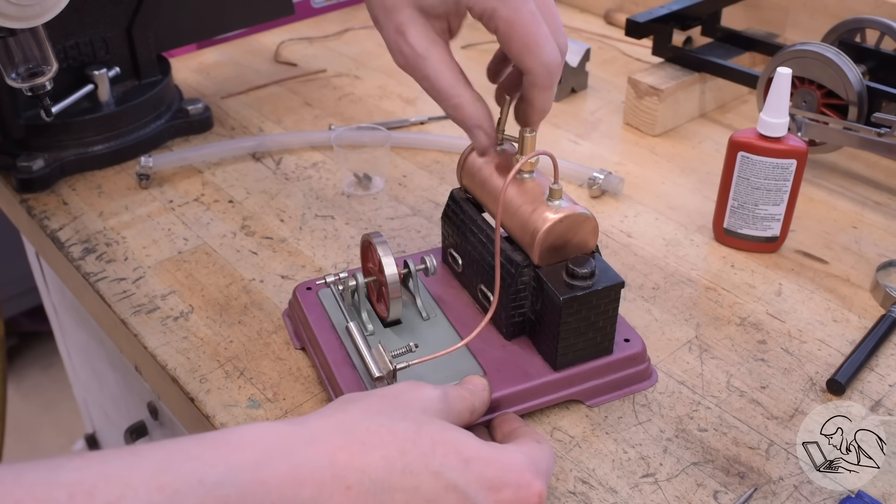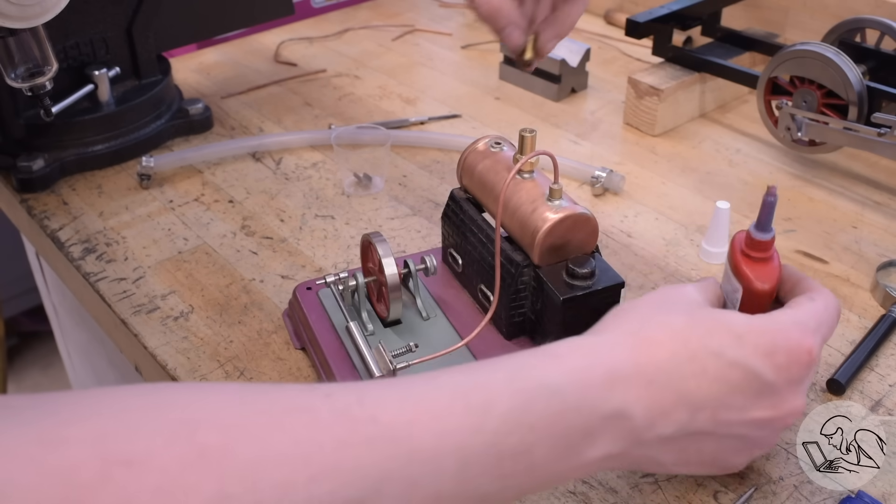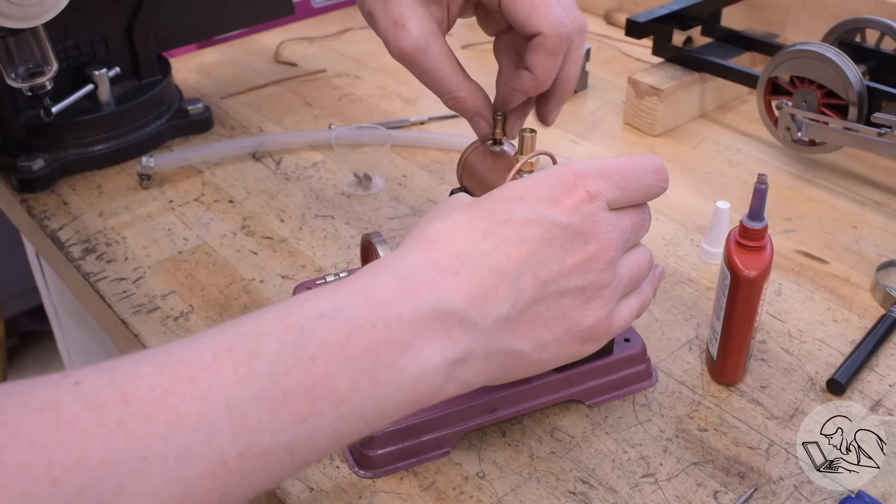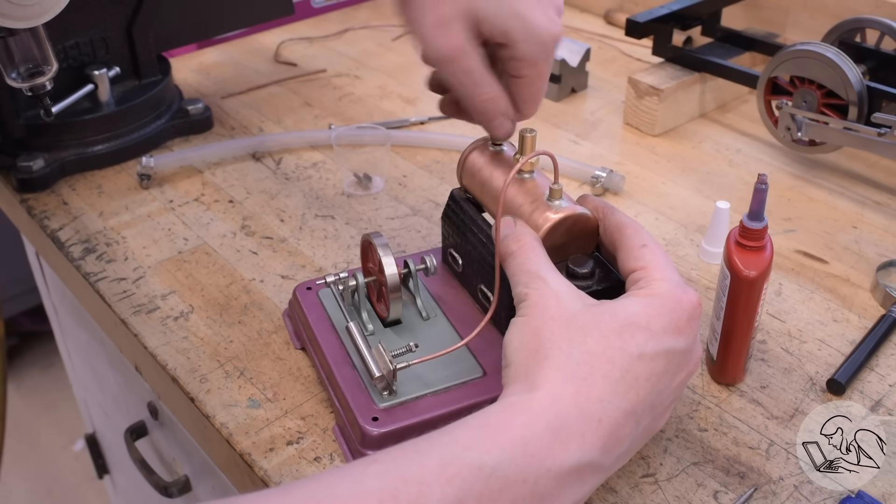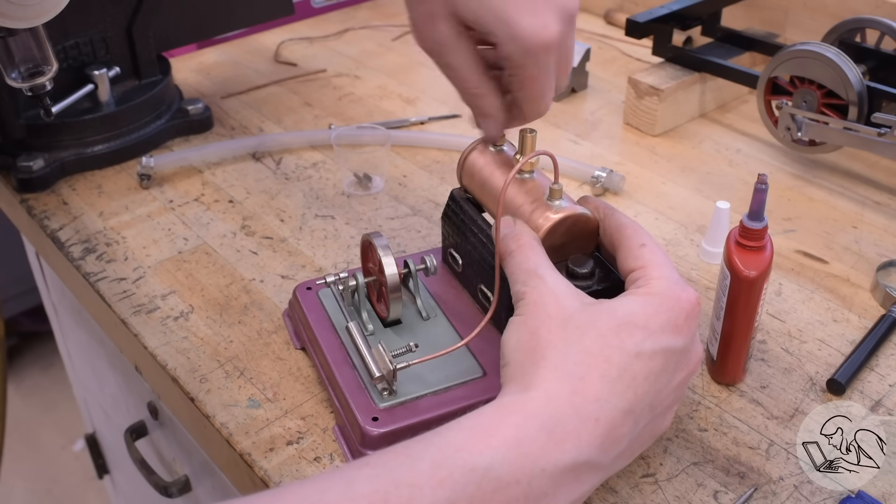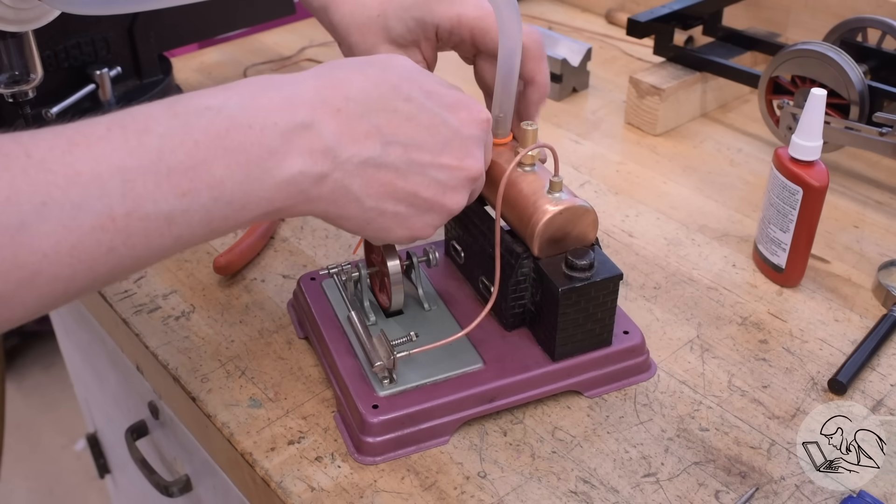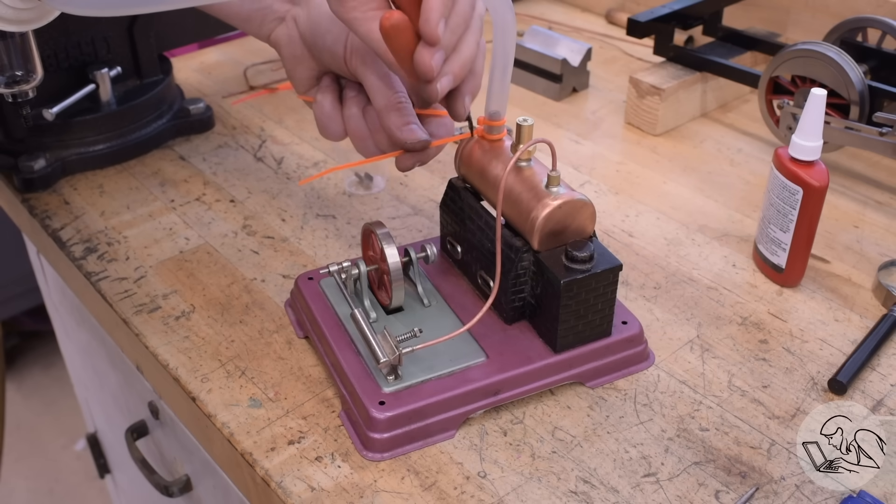I dug through my random steam fittings bin and I found one that had the same thread on it as the whistle, so I removed that and I'll thread this fitting in here. This is a fitting that I use for testing small steam engines. It has a little barb on the end that allows me to zip tie some silicone tubing onto it for low pressure testing of small engines. The other end of that tubing goes to my low pressure regulator which then goes to my compressor. Silicone tubing like this is fine to about 20 psi.